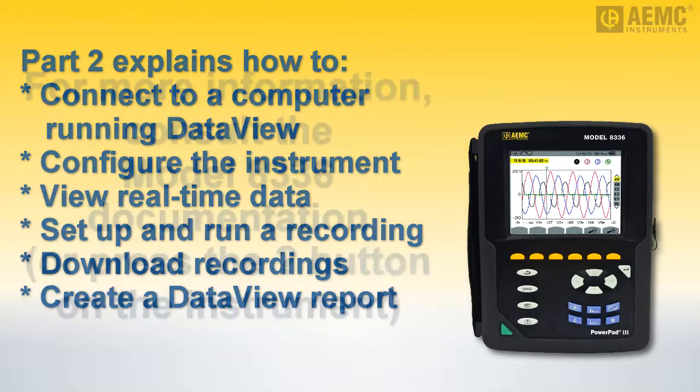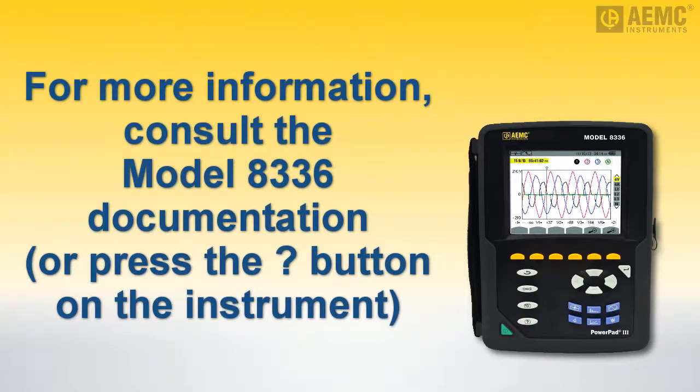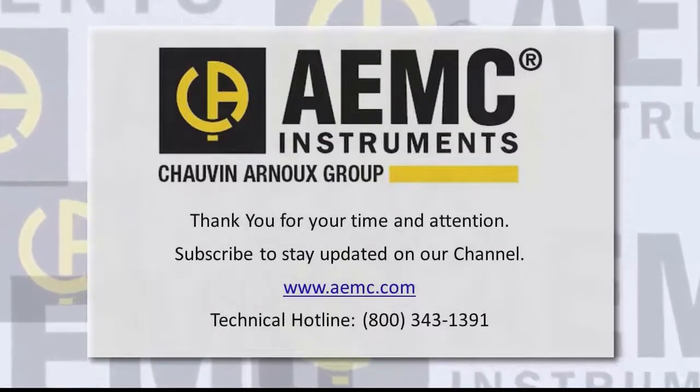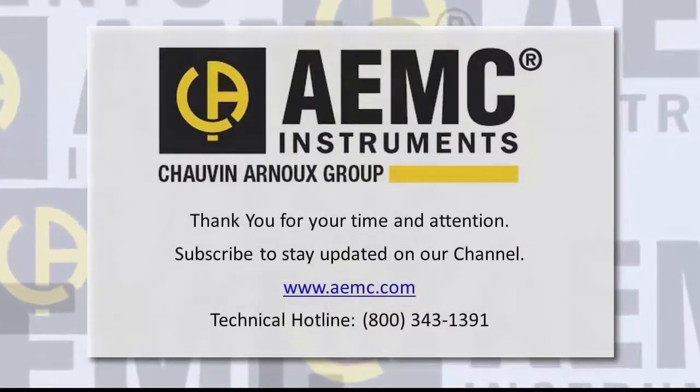Bear in mind, we have only touched upon a few basic functions of the Model 8336 to introduce you to the instrument and get you up and running quickly. Many other features are available, including selecting viewing modes, setting alarms, taking data snapshots, and choosing from a variety of display options. These and all other Model 8336 features are discussed in detail in the user manual that comes with the product. You can also receive guidance directly from the instrument by pressing the Help button. And be sure to check our YouTube channel for instructional videos on other topics in electronics, including the many products offered by AEMC.